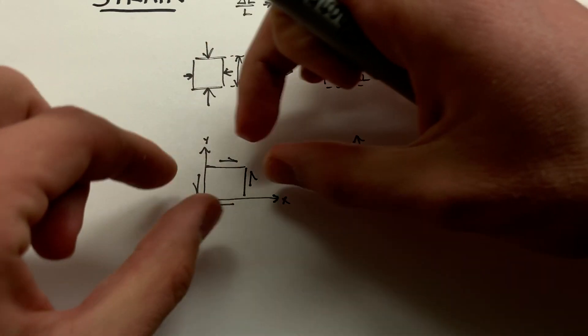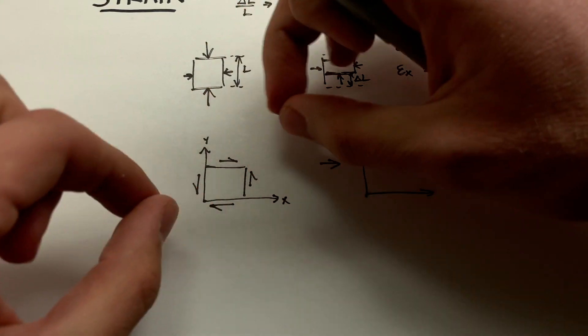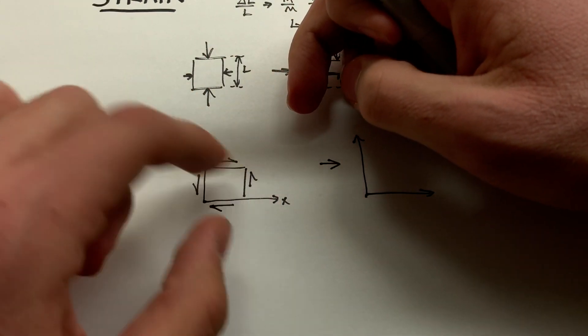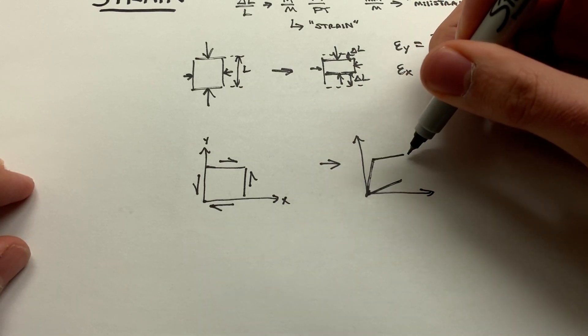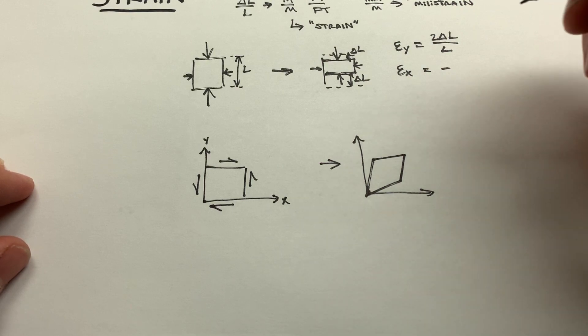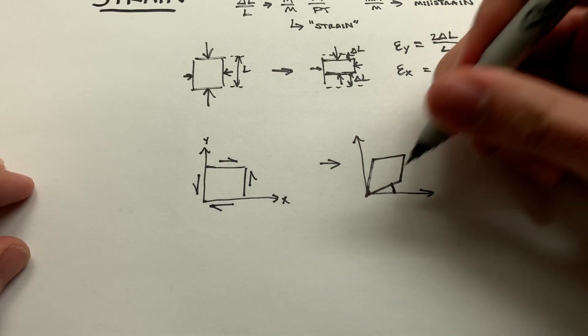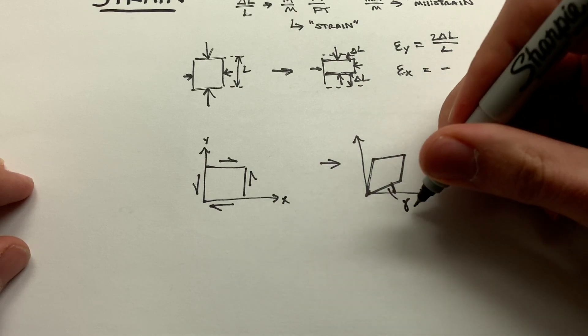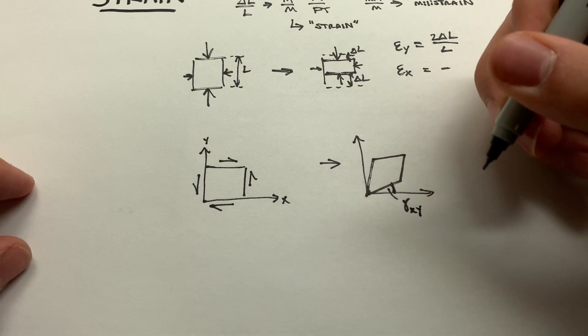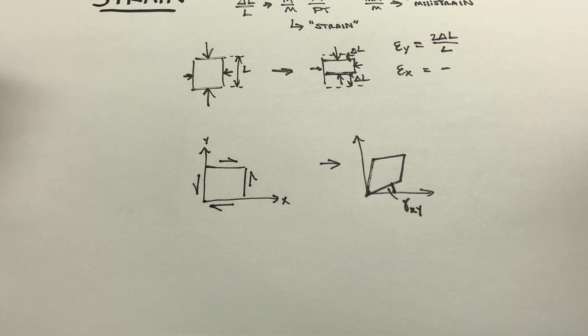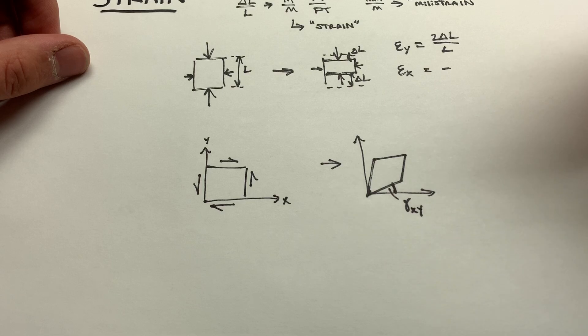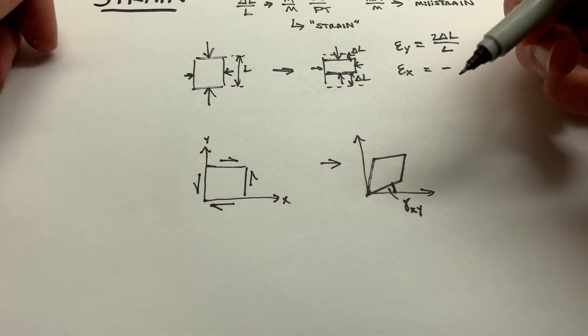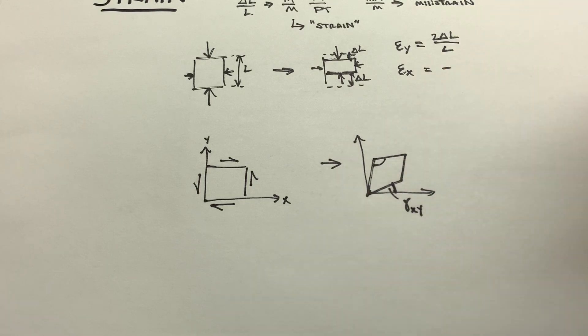Those shear strains are kind of pinching these two corners together and kind of, since they're pinching these, you might think of them as kind of bulging these two corners out. So over time, what we'll have is this becomes a little bit more of a rhombus kind of shape. And the thing to note here, this angle is going to be your gamma x y. And a shrinking angle here, if we go from a right angle to a smaller angle, then this will be negative. If we go from a right angle to a larger angle, obtuse, like up here, that'll be positive. So a little bit more intuitive on the shear strain conventions.